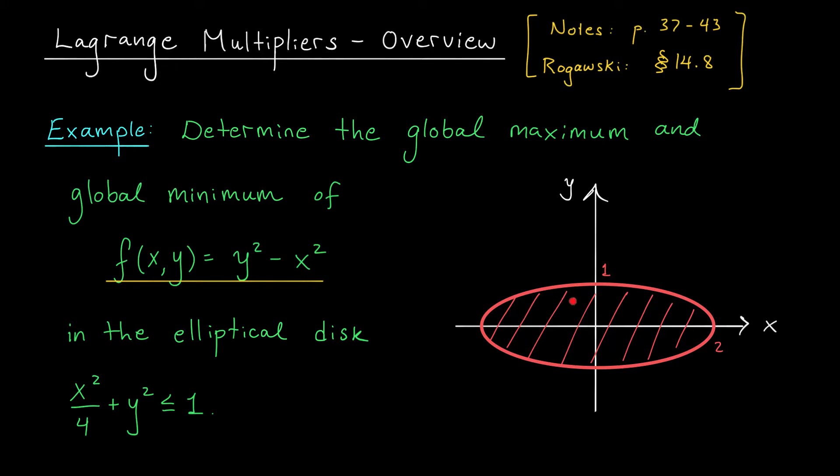Finding the critical points inside won't be too hard, but optimizing the function on the boundary might be a bit more challenging. After all, our boundary components in the past were always made up of straight line segments. They were really easy to work with, but now our boundary is this ellipse, the ellipse described by the equation x squared over 4 plus y squared is equal to 1.